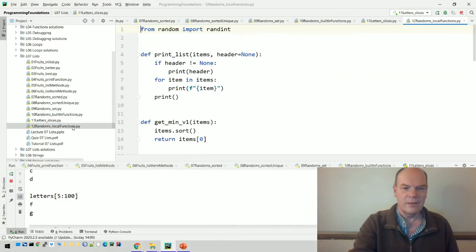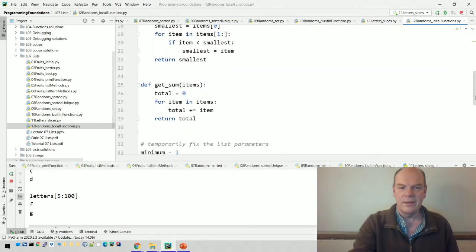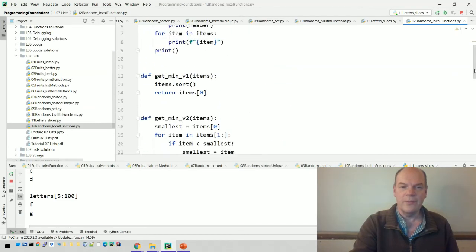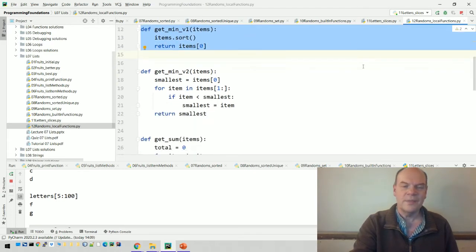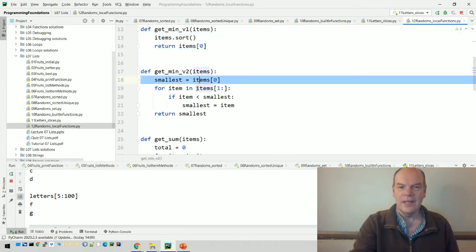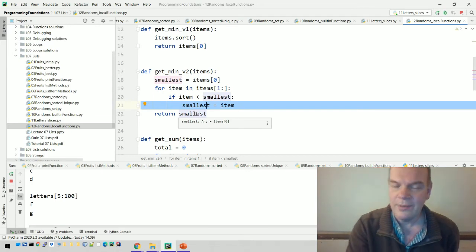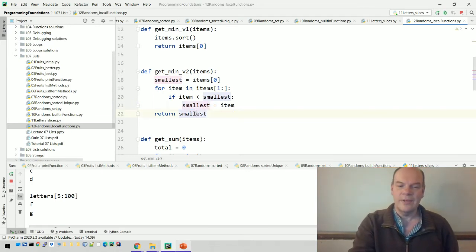So here we are. We've got minimum version one that sorts the list and then returns item zero, which as I said is a bad idea. Instead, we find the smallest equals item zero, and then we loop over the list from one onwards. And if the item is less than the smallest, then we set the smallest to be the item. And finally, when we've looped all the way through the list, then we return that smallest value.